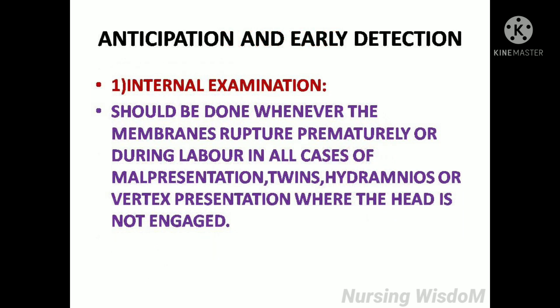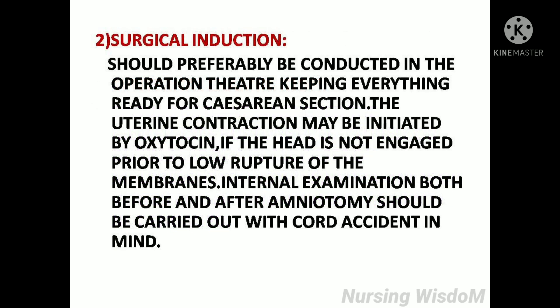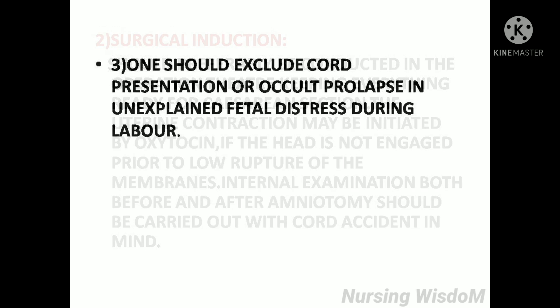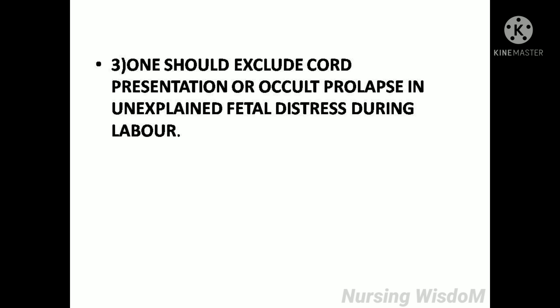Anticipation and early detection: Internal examination should be done whenever the membrane is ruptured prematurely or during labor in all cases of malpresentation, twins, hydramnios, or vertex presentation where the head is not engaged. Surgical induction should preferably be conducted in the operation theater with everything ready for caesarean section. Internal examination both before and after amniotomy should be carried out with cord accident in mind, and one should exclude cord presentation or occult prolapse in unexplained fetal distress during labor.